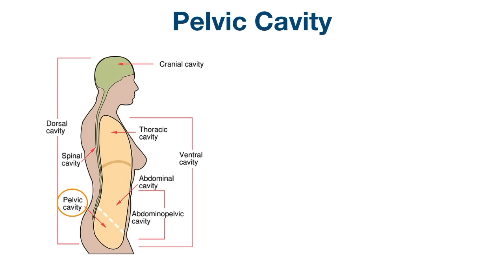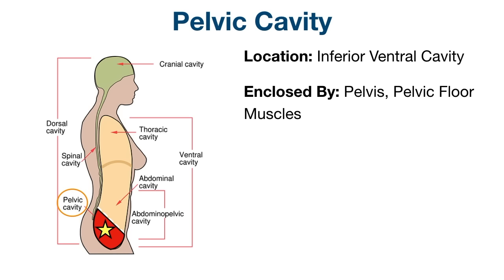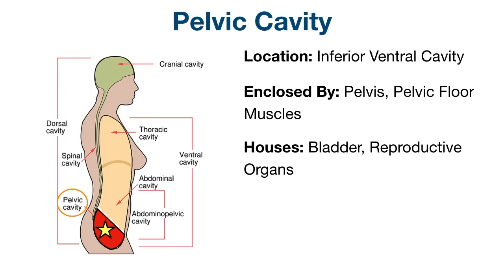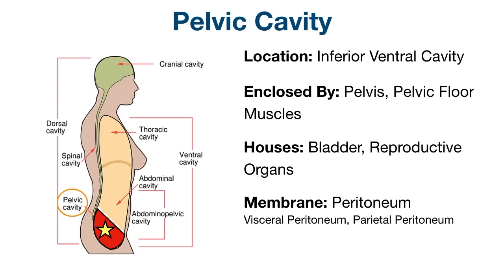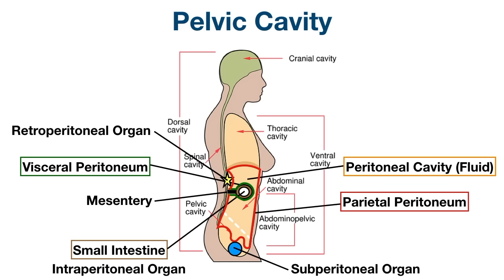Finally, we have the pelvic cavity. The pelvic cavity is the inferior portion of the ventral cavity, enclosed by the pelvis and pelvic floor muscles. It is continuous with the abdominal cavity superiorly at the pelvic inlet. The pelvic cavity mainly houses the urinary bladder, reproductive organs, pelvic portion of the colon, and rectum. Since the pelvic cavity is continuous with the abdominal cavity, the fluid and membranes are the same. It is lined by the peritoneum — both the inner visceral peritoneum and outer parietal peritoneum — and the peritoneal cavity is the potential space between them containing peritoneal fluid. Some structures such as the bladder are subperitoneal, below the peritoneum.